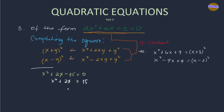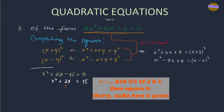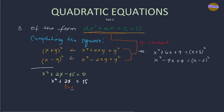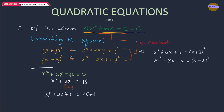Then we take the coefficient of x, which is 2, and divide it by 2 to get 1. Then 1 squared is equal to 1. We add the square of 1, which is 1, to both sides of the equation. So we have x² + 2x + 1 = 15 + 1.